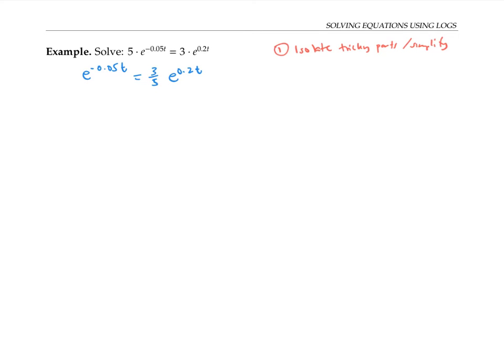One way to proceed would now be to clean things up further by dividing both sides by e^(0.2t). But I'm going to take a different approach and go ahead and take the natural log of both sides. That gives me ln(e^(-0.05t)) = ln((3/5)·e^(0.2t)).